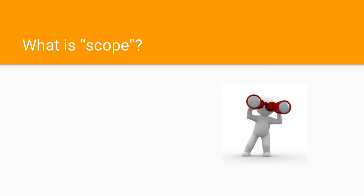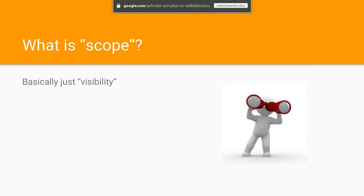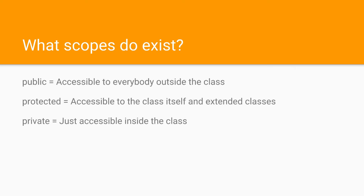Let's go ahead and talk about scope. Now what is scope? We talked about this in other tutorials and you can refer to the general PHP tutorial I made. Scope is just visibility. That means properties and methods can be visible to other functions or objects, or they cannot. We have three different cases: public, protected, and private.